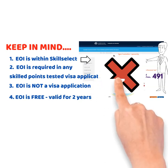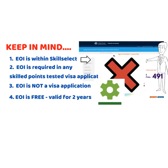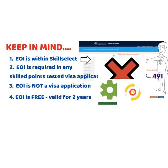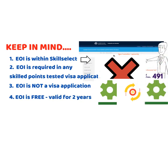What are the circumstances that may affect your scores and that you need to update in your EOI? If you gained new work experience, you need to update your EOI. Or if you have obtained a higher education than previously claimed, you also need to update. If you obtained a higher English score, or your family composition has changed — meaning you got married or had a child — update your EOI. And if you lodge multiple EOIs, you have to update all of them.